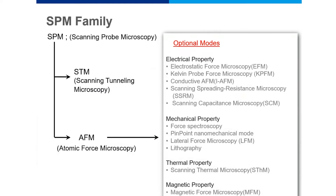This is the complete SPM family. Scanning probe microscopy is like a big umbrella under which you have the scanning tunneling microscope and the atomic force microscope. The AFM then has many basic and advanced modes, like EFM, KPFM, conductive AFM, scanning capacitance microscopy, LFM, and so on. Today we will focus more on the basics of how to generate an image using an atomic force microscope.